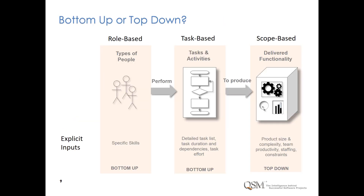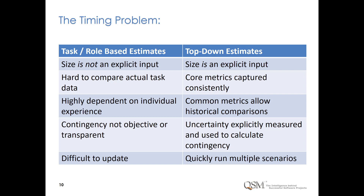Estimation falls into two broad categories. Bottom-up estimates decompose all the work required to build the product into a detailed task list, estimate duration and effort for each task, then sum task estimates to produce overall schedule, cost, and effort. This requires detailed knowledge that we may not have. For early estimates, detailed task or role-based estimates suffer from a mismatch between the data available and the data required to create a detailed task list. These kinds of estimates are closer to planning than upfront estimation, and a high level of detail makes them difficult to revise and update when the landscape changes.